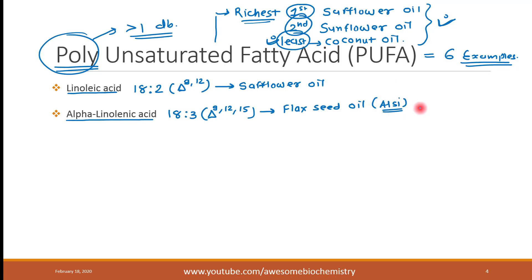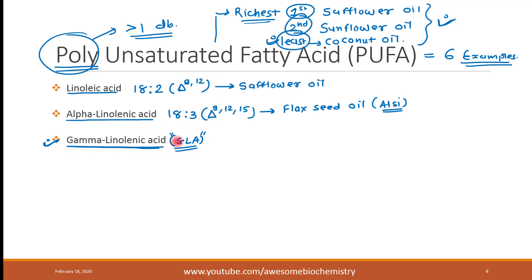The third example is gamma-linolenic acid, whose popular short form is GLA. This is also an 18-carbon long compound with three double bonds — just like alpha-linolenic acid. The locations of the three double bonds are delta 6, 9, and 12. There is a slight difference in the location of double bonds compared to alpha-linolenic acid, which is why one is called alpha and the other gamma.